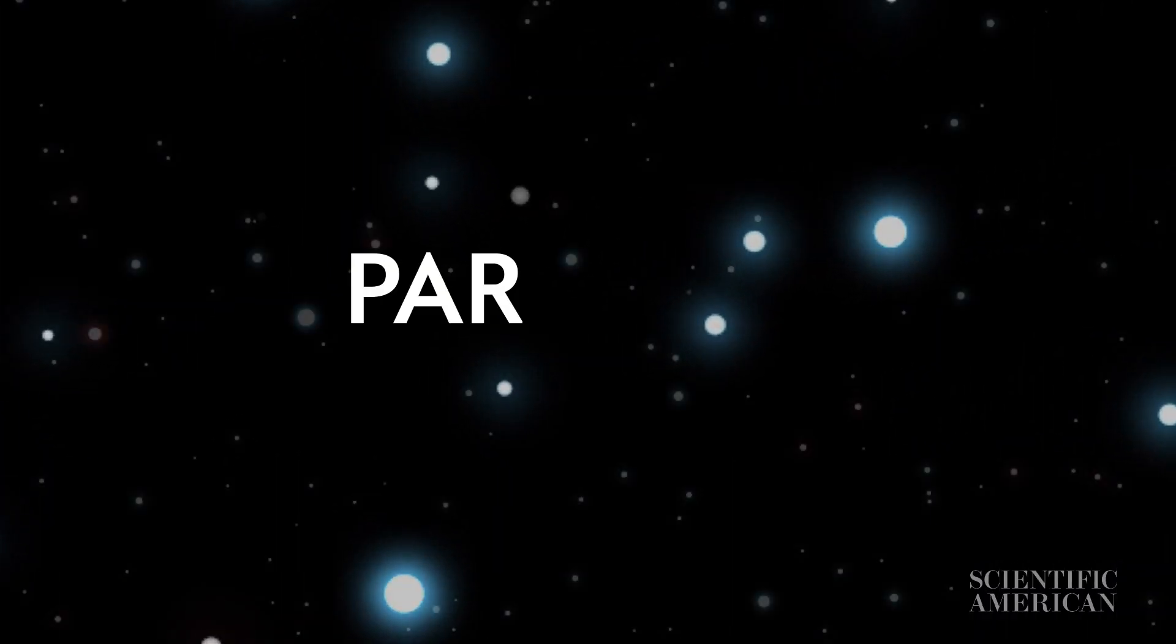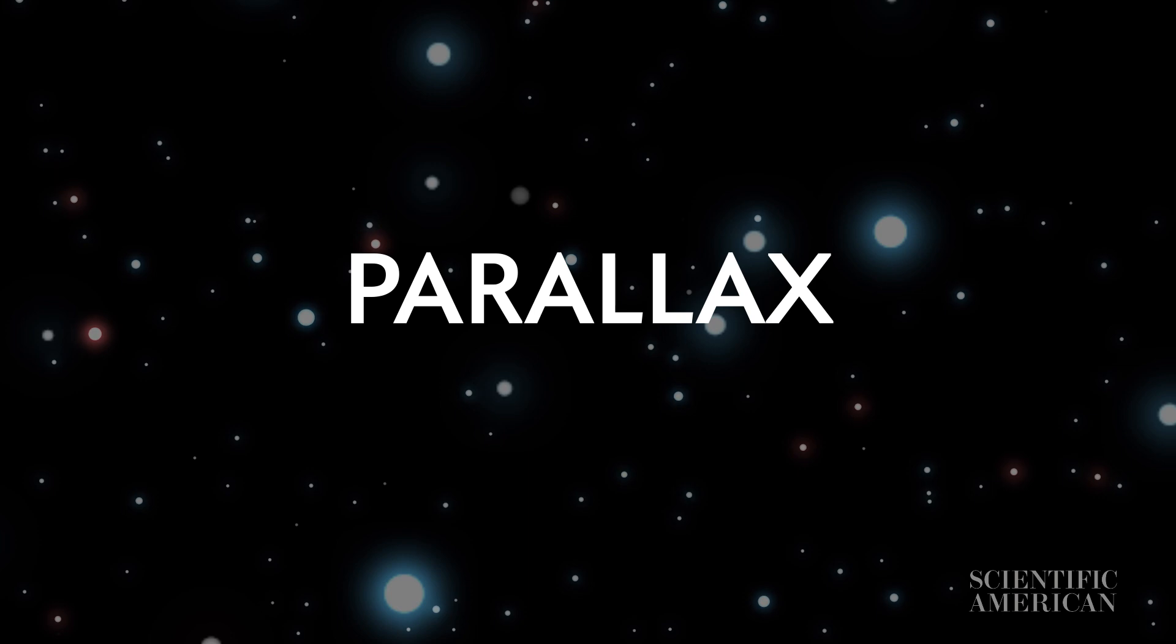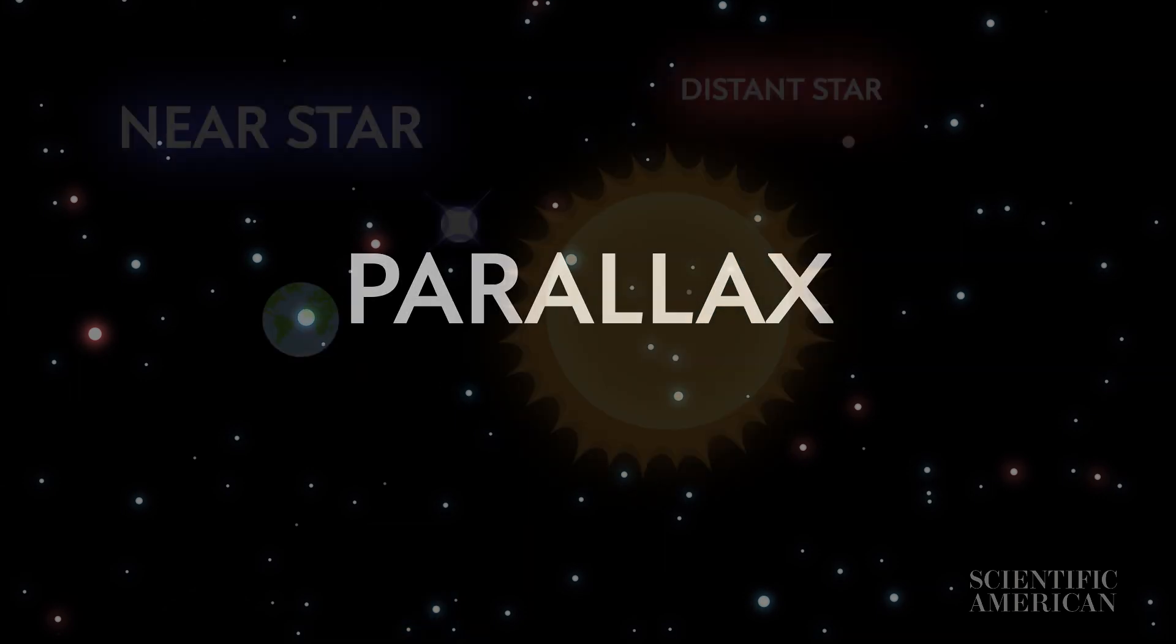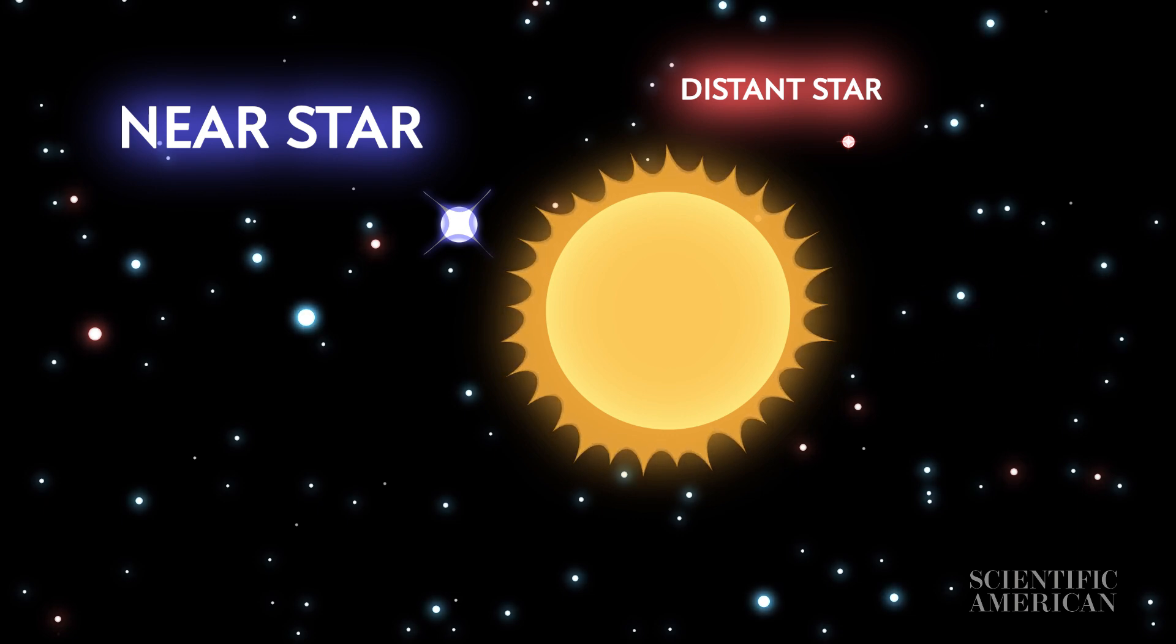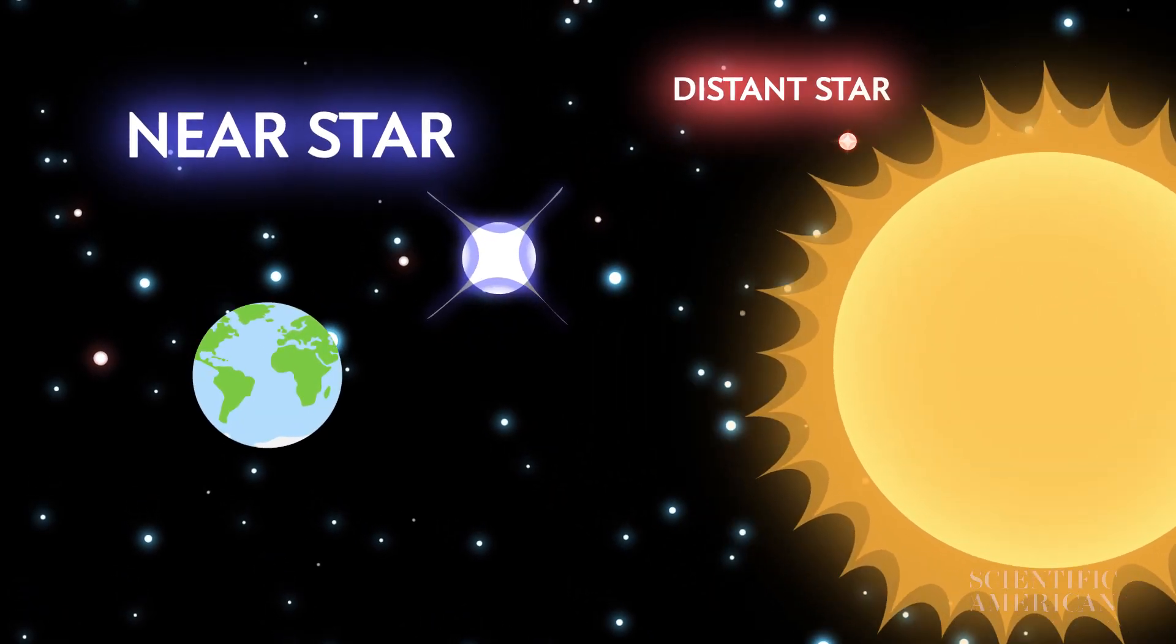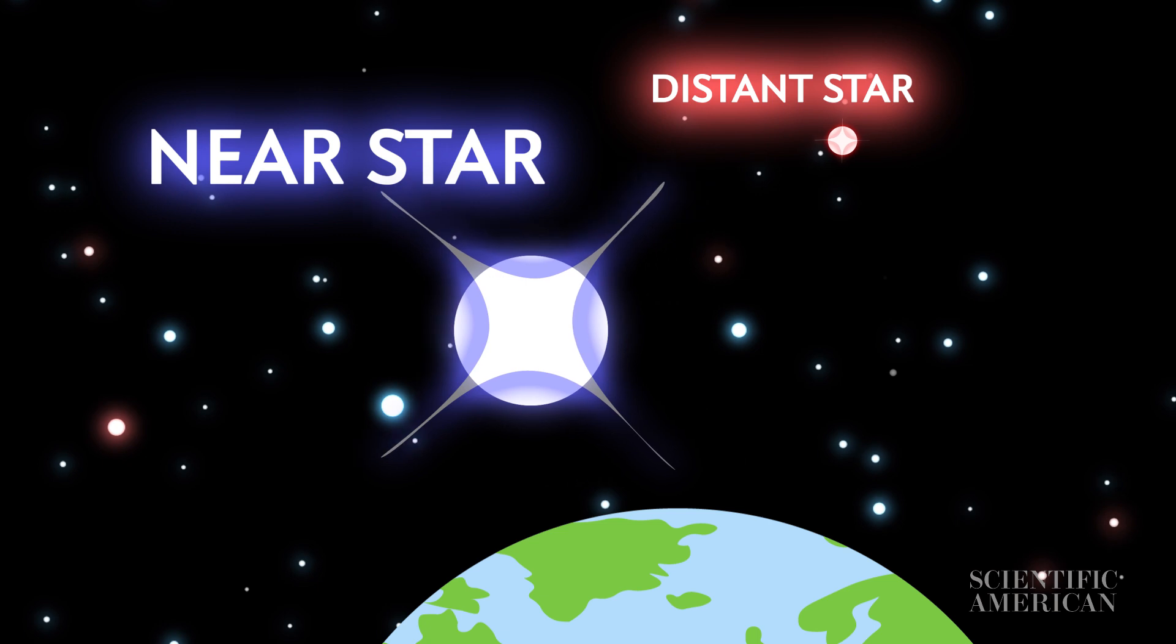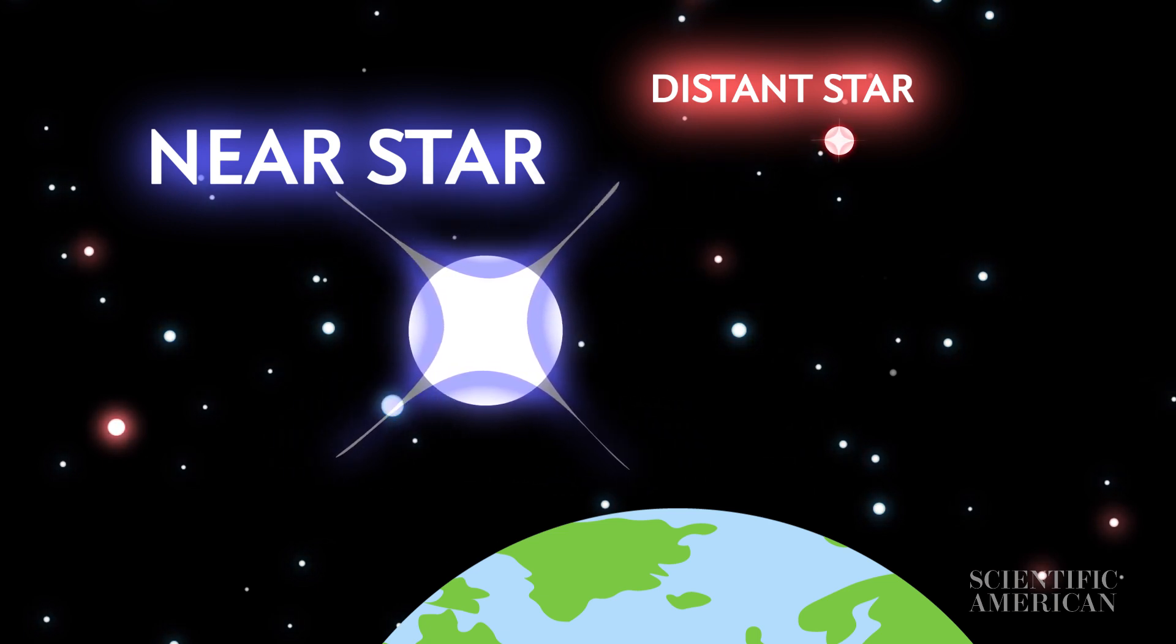This effect is called parallax, and we can use it to measure large distances. As our planet goes around the sun, the stars appear to shift back and forth relative to more distant stars. The farther away a star is, the less it moves.